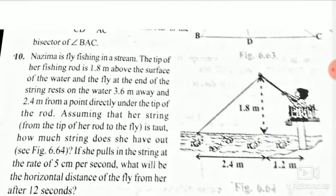1.8 meters above the surface of water. And the fly at the end of the string rests on water 3.6 meters away. So here is 2.4 plus 1.2, that is 3.6 meters away, and 2.4 meters from the point directly under the tip of the rod.